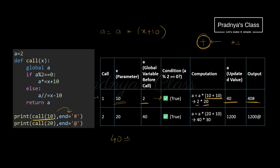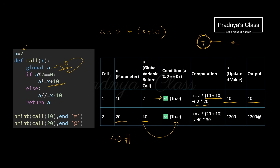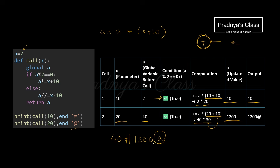In call two, 20 is sent to x, and a is now the updated global value 40. 40 is divisible by 2, so the condition is true again. The statement evaluates: x plus 10 is 20 plus 10 equals 30, then a into 30 is 40 into 30 equals 1200. This function call returns 1200 followed by the end parameter at-rate symbol. Since end parameter is used, output is on the same line: 40 hash 1200 at-rate. The correct choice is option A.